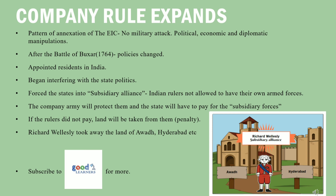To summarize the pattern of annexation by the East India Company: there was no direct military attack. They opted for political, economic, and diplomatic methods to extend their territories in India.